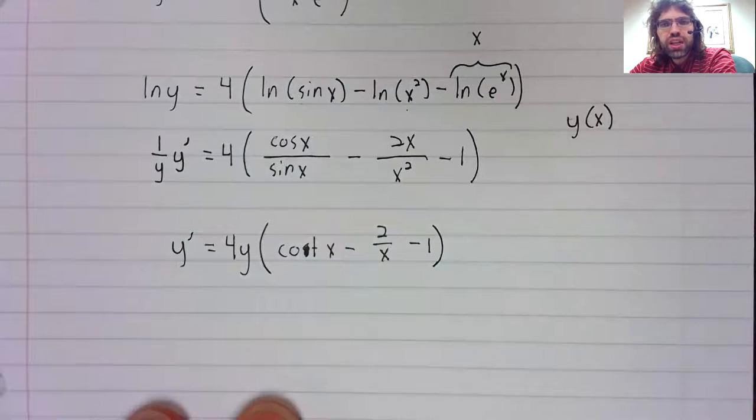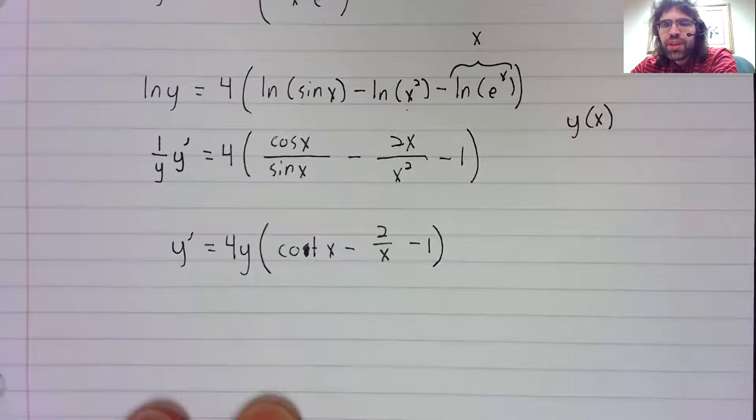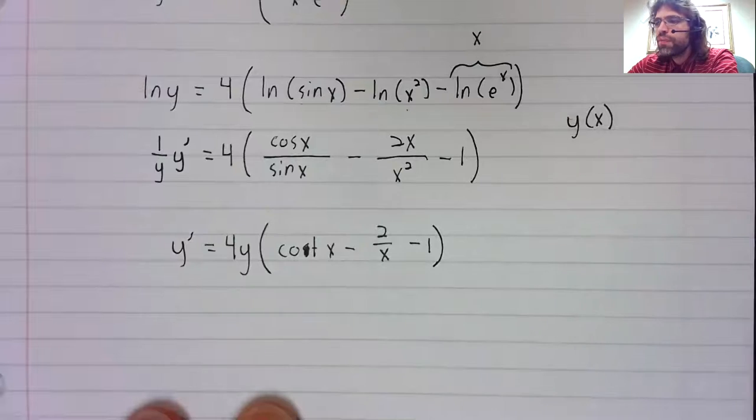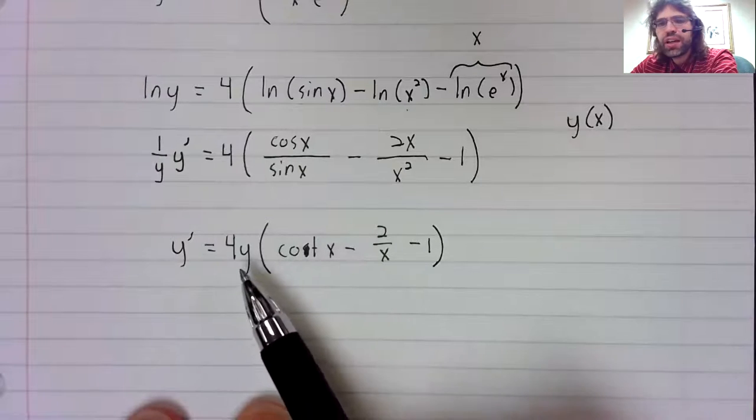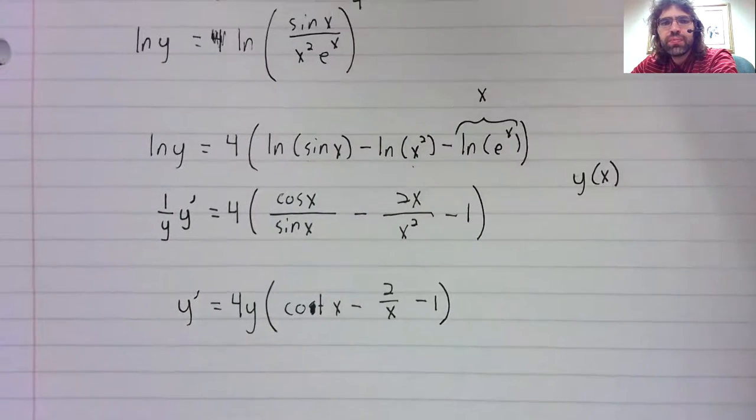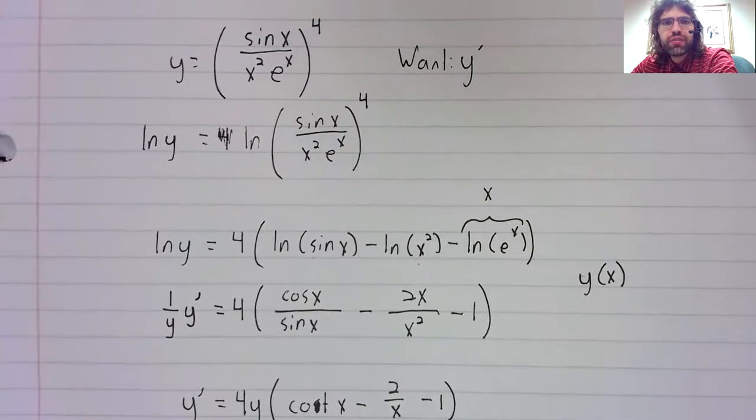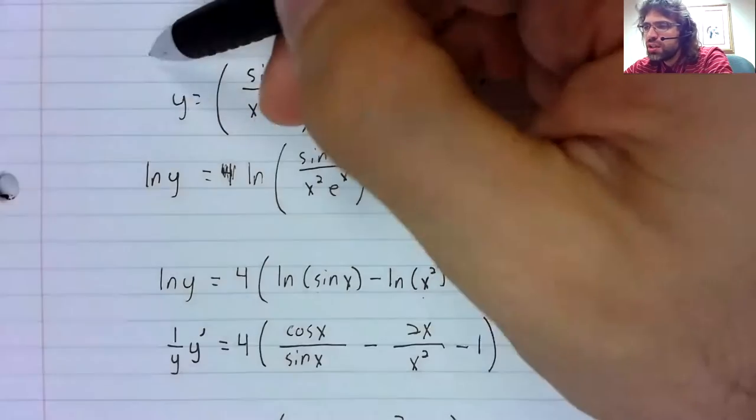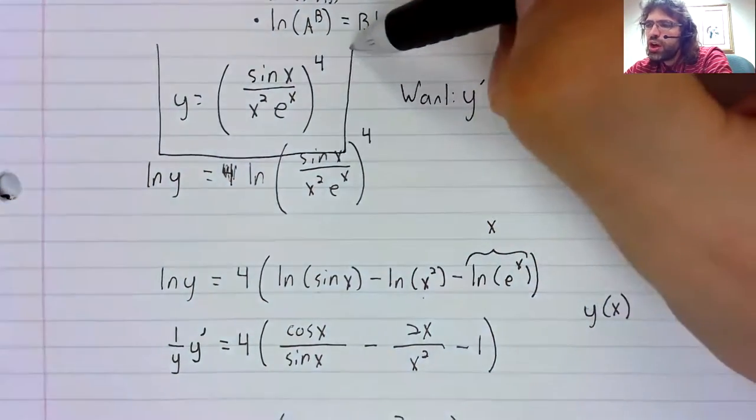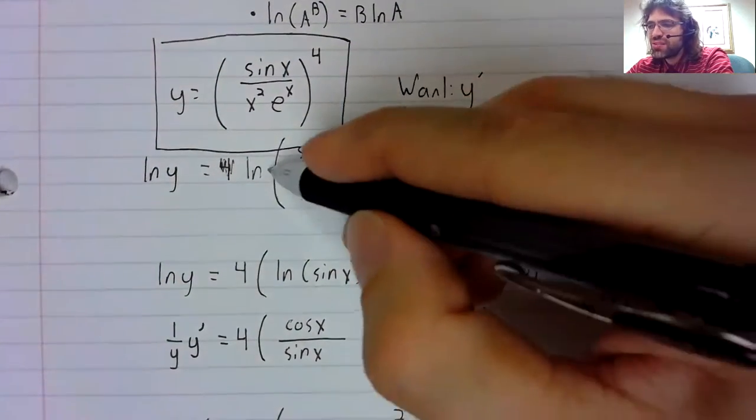But there's a step left to do. I know I said that when you do implicit differentiation, it's normal to have x's and y's, but when we're doing logarithmic differentiation, we know what y is.